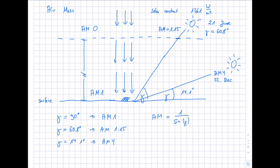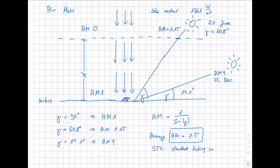For Germany, you can calculate the average or mean air mass over one year, which is defined as 1.5. This is an important value because it appears later in the course as one parameter of the Standard Testing Conditions (STC). If you want to define lab conditions representing real PV system conditions — whether roof-mounted or ground-mounted — one parameter is the representation of the atmosphere, given by an air mass value of 1.5.